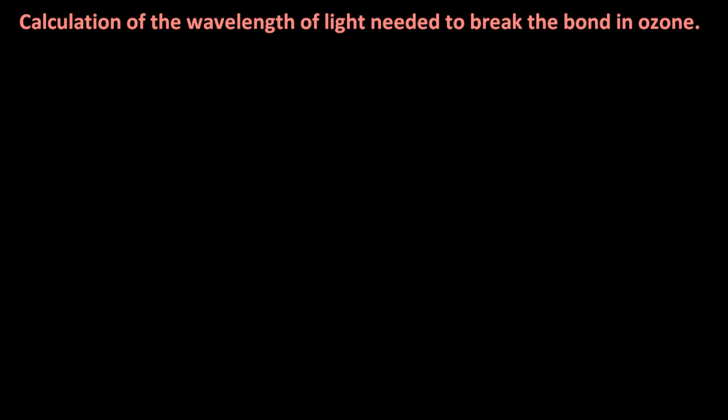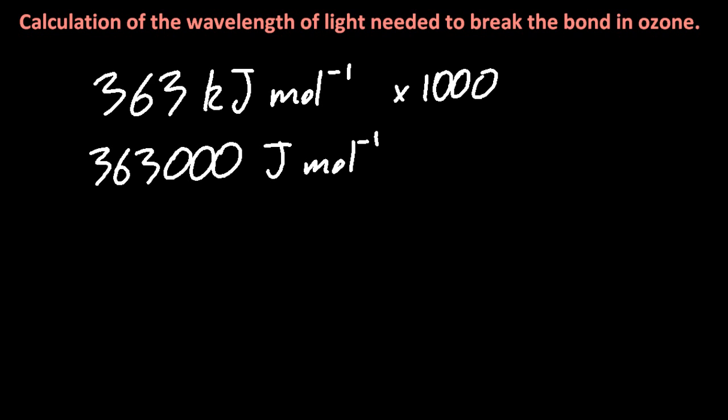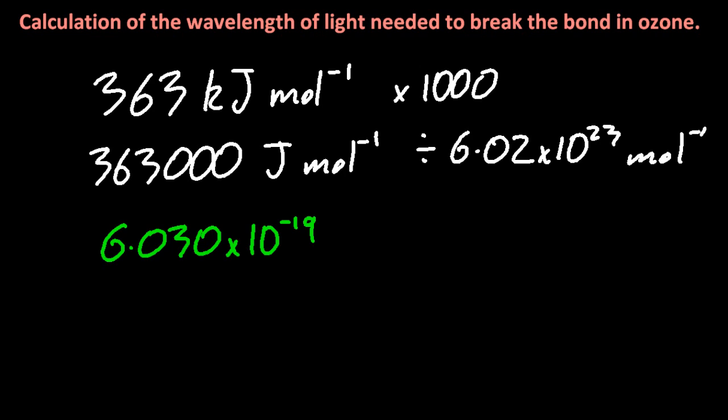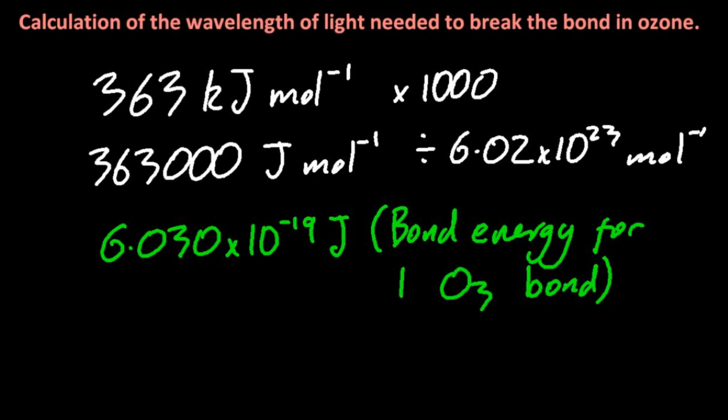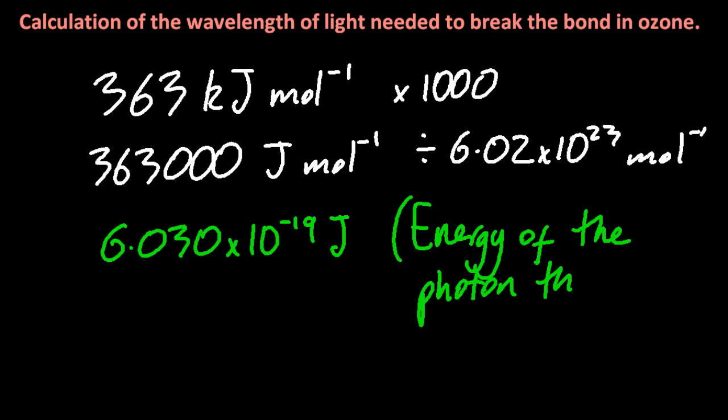So let's have a look at some calculations. Now the fun fact at the beginning was that the bond is 363 kilojoules per mole of ozone bonds broken. I'm going to multiply by 1000 to get joules per mole. And then I'm going to divide by Avogadro's constant. And that's going to give me the value in joules of one of these oxygen-oxygen bonds in ozone. And that's also going to give me the energy of the photon that will break this oxygen-oxygen bond in ozone.